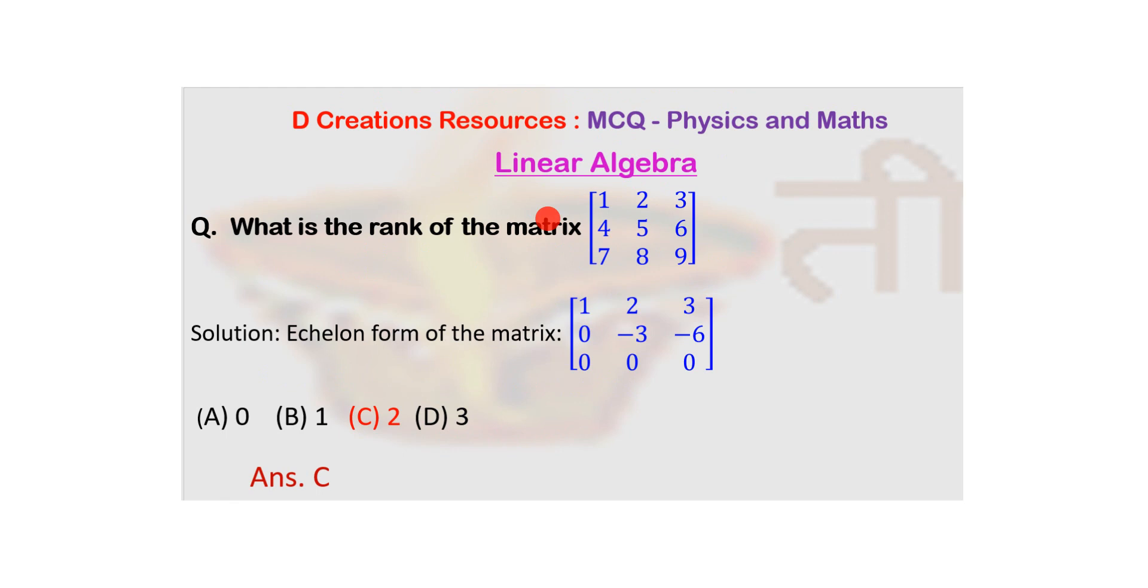When you do that, this is the echelon form of the matrix. Clearly you can see that the number of non-zero rows are 2. So amongst the options 0, 1, 2, 3, C is the correct option. Rank of this matrix is 2. Thank you.